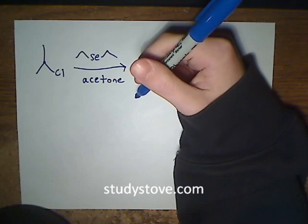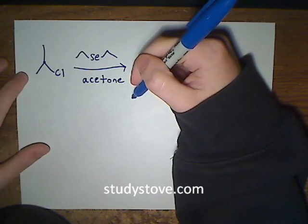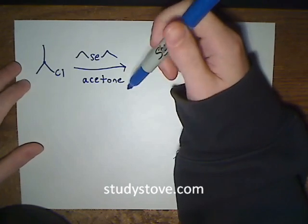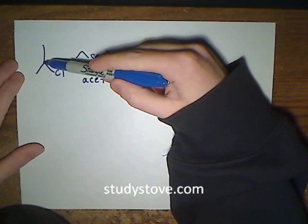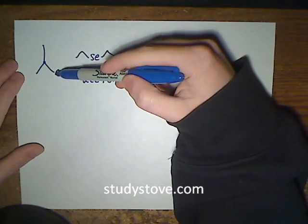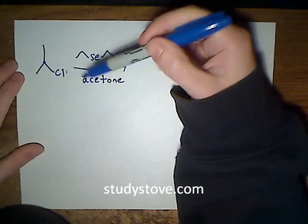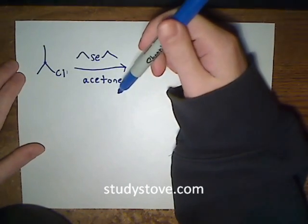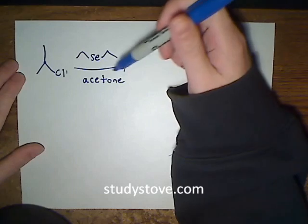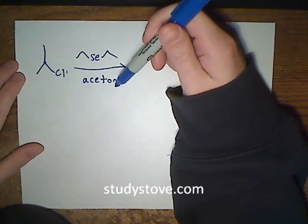This question is asking us to provide the major products for this reaction. The first thing to note is we have this secondary carbon attached to a good leaving group. We know that the chlorine atom can leave as a chloride anion because the reaction is taking place in a polar solvent with acetone.